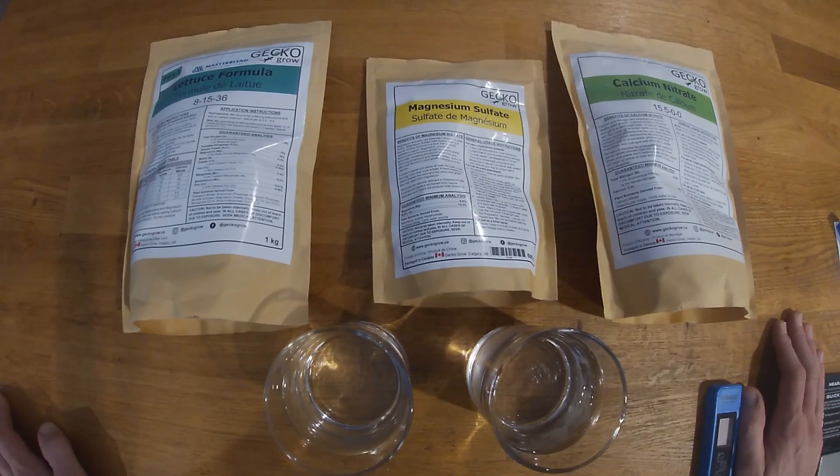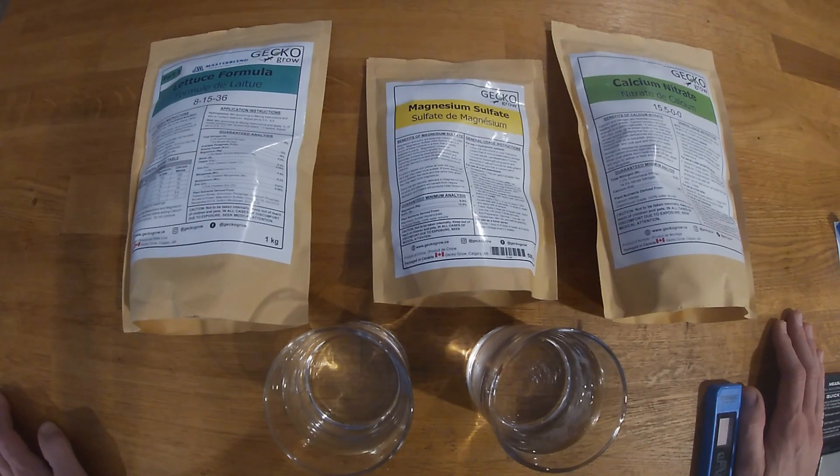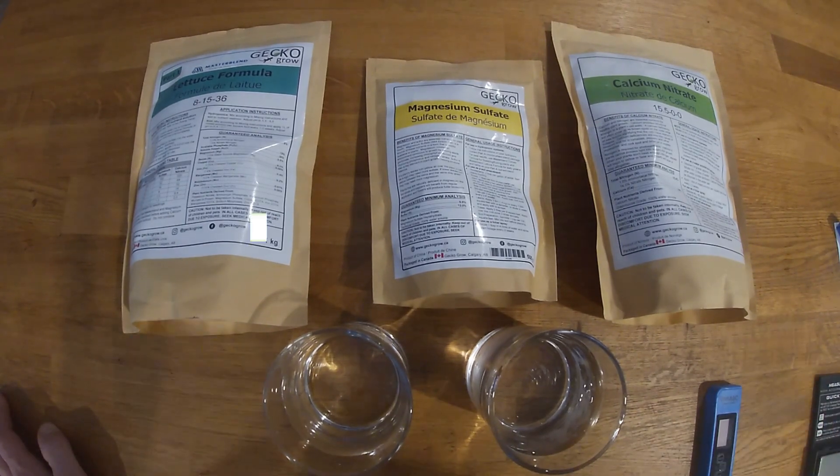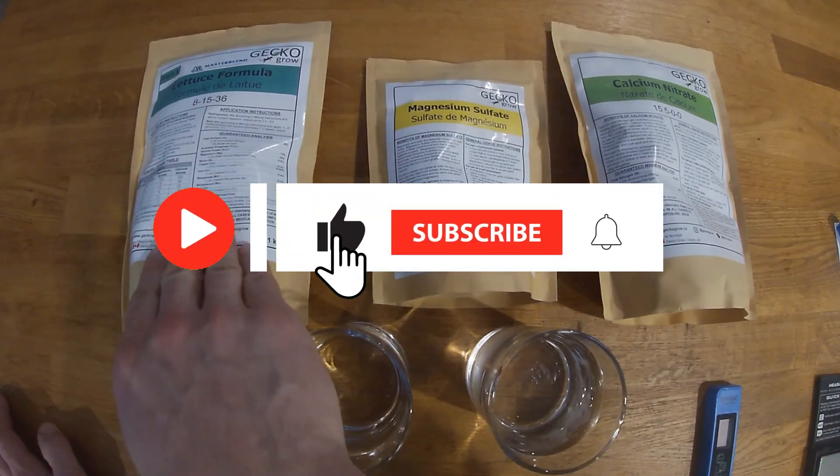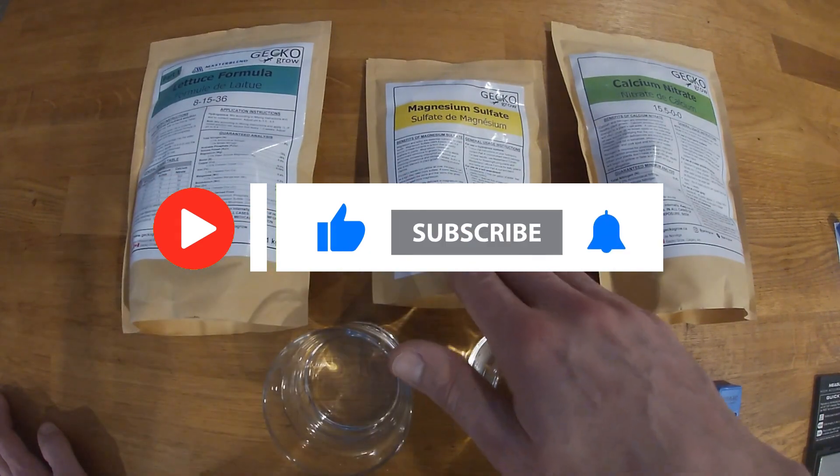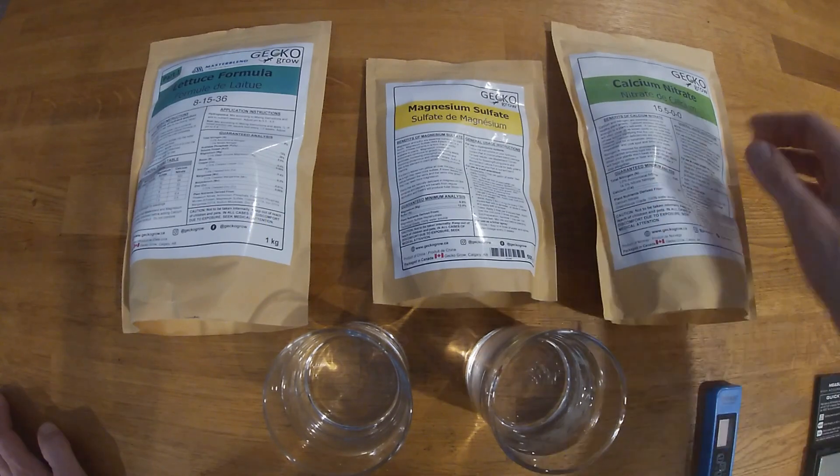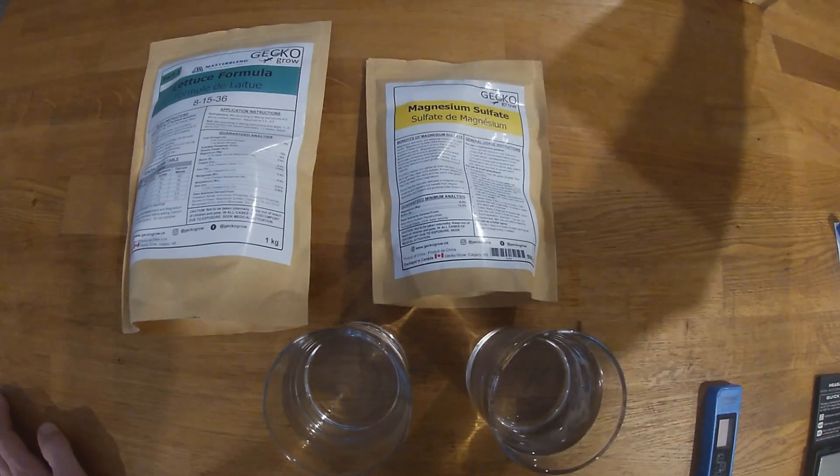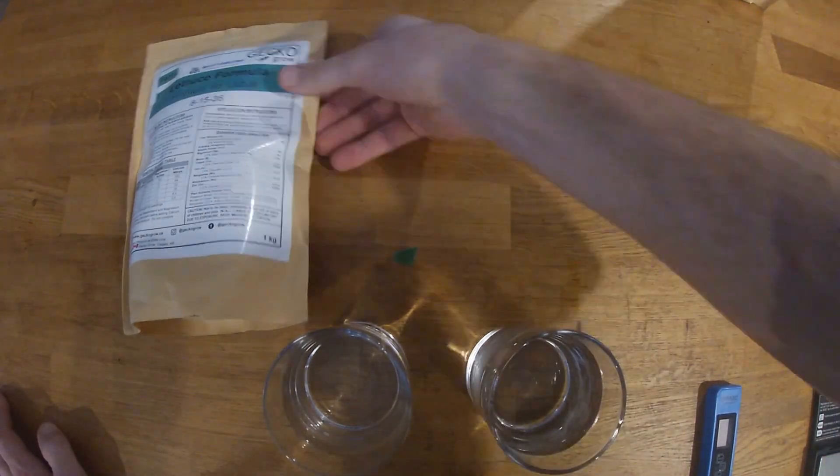Hey guys and welcome back to Growing with Simon. In this video I will be talking about nutrients. I personally use the Master Blend lettuce formula which is a three-part system: the lettuce formula, magnesium sulfate, and calcium nitrate.